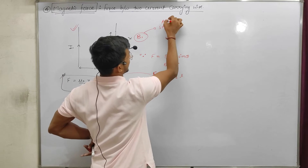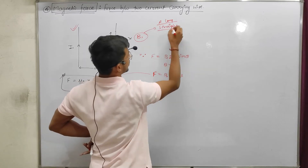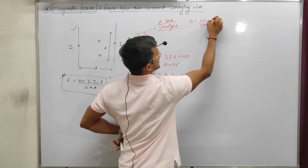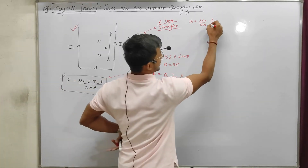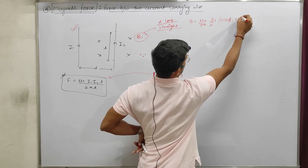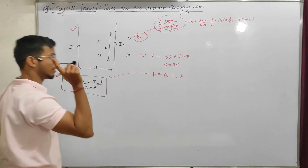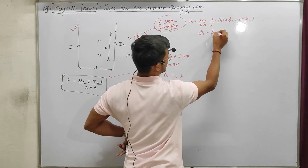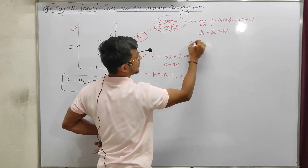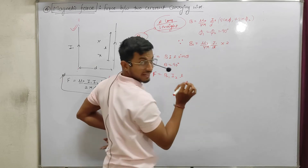For a long straight wire carrying current, the magnetic field produced is B = (μ₀/4π) · (I/d) · (sinθ1 + sinθ2). For an infinitely long wire, both angles are 90°, so sinθ1 + sinθ2 = 2. Therefore B1 = (μ₀/4π) · (I1/d) · 2.